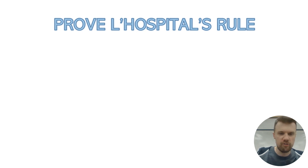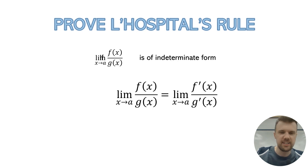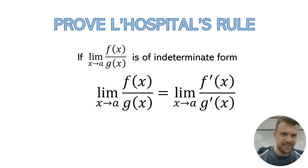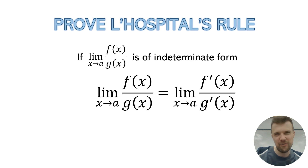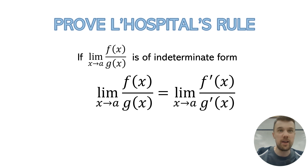So, first of all, what is L'Hôpital's rule? A reminder that it is: if you're trying to find the limit as x tends to a of f(x) over g(x), then as long as that is of indeterminate form, that's the same as finding the limit as x tends to a of the derivative of f(x) over the derivative of g(x). That all sounds horrible written out in words, but you can see it on the screen — it's really not that bad, and a very useful rule when trying to find certain limits.